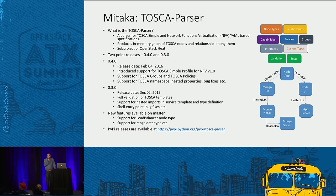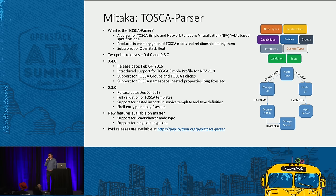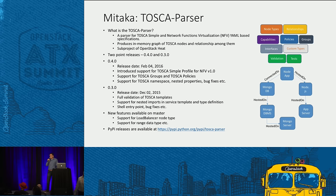Thanks to the development team, we had two point releases during the Mitaka cycle — point three and point four — with significant enhancements. The most notable was support for NFV. TOSCA is getting increasingly popular in the NFV community, and at the last summit in Tokyo we had a meeting with the Tacker project team, which is now an OpenStack mainstream project, about extending TOSCA Parser support to the NFV profile.